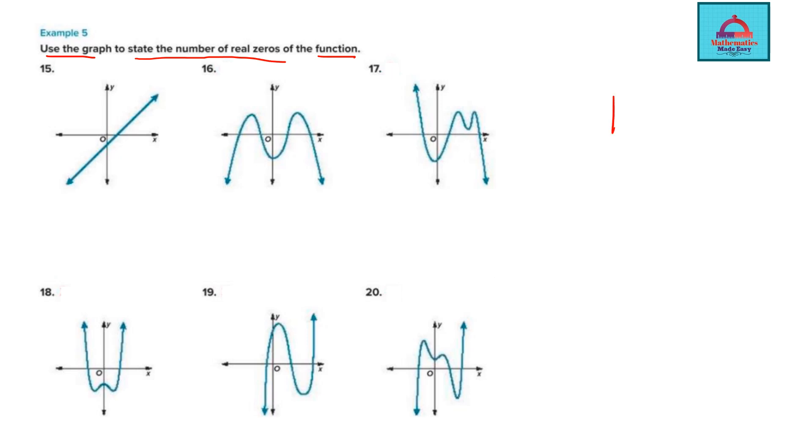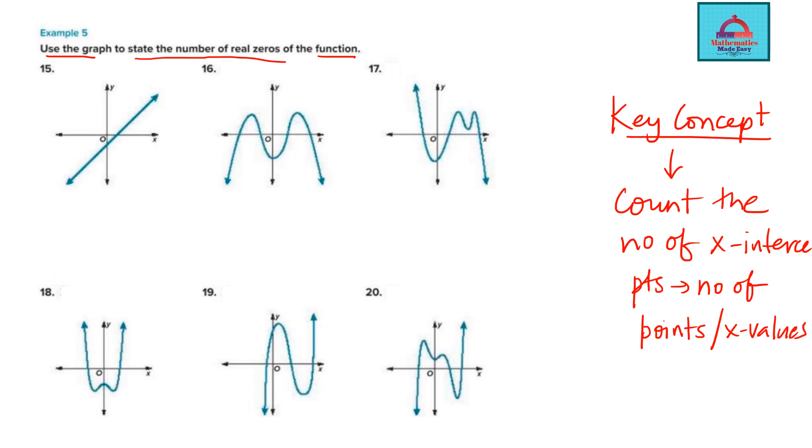The key concept I will write here for you that we will use to solve all these six questions is: count the number of x-intercepts. X-intercepts means the number of points or x-values where the graph touches the x-axis. That will give you your answer.